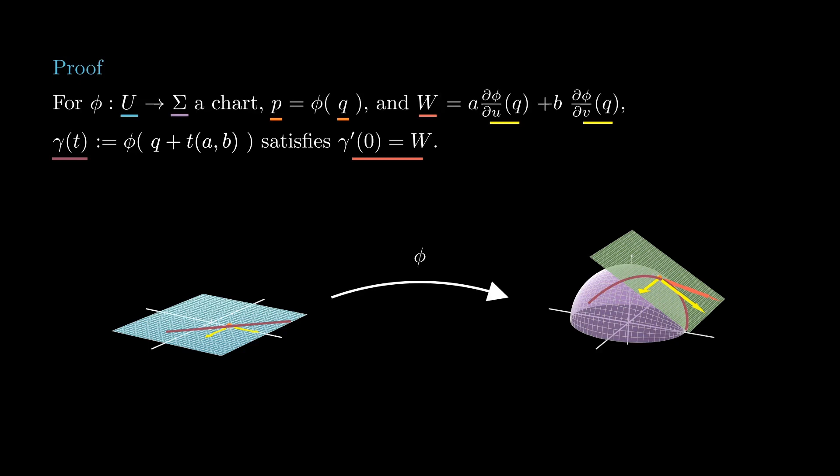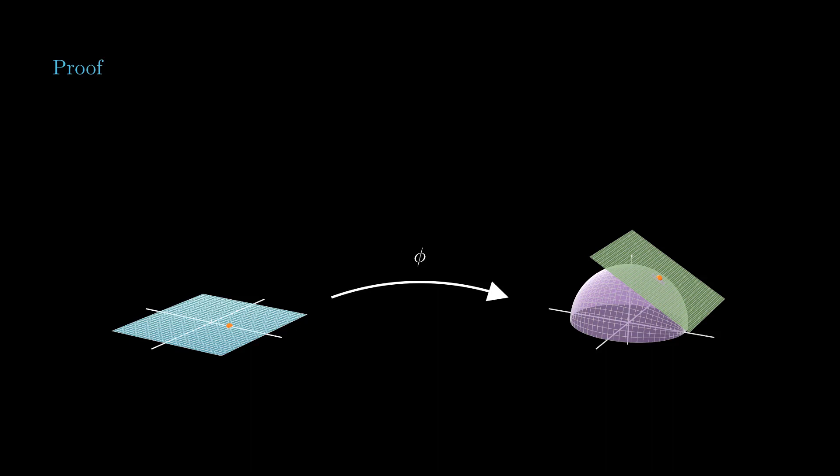This shows that the tangent plane to sigma at p is contained in the set of velocity vectors of curves passing through p. Now, we check the other contention.